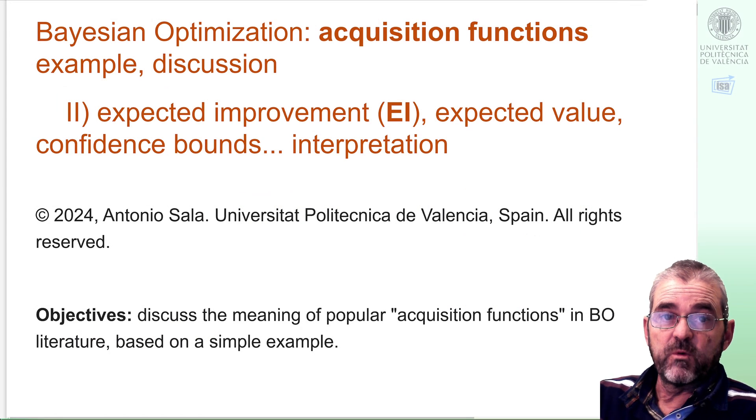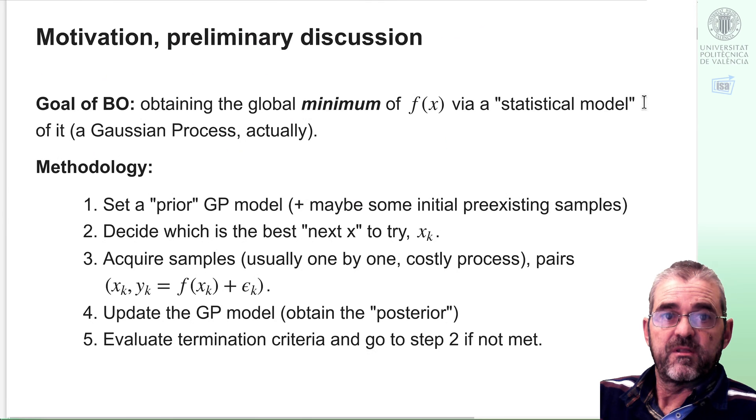I'm Antonio Sela. In this video, we are going to continue with an example in which we will try to understand the meaning of some acquisition functions in Bayesian optimization. In a previous video, we explained how the example was built and we also discussed the meaning of the probability of improvement.